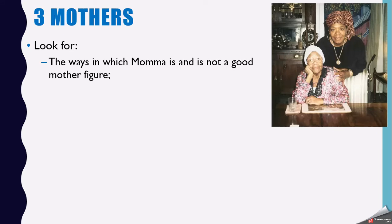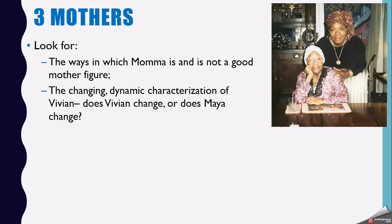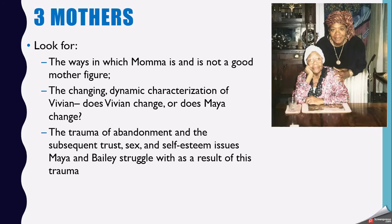Things to look for: the ways in which Mama is and is not a good substitute mother figure — how she does a good job and where she falls short. There's a lot in terms of how the children are loved and how love is expressed or not expressed. Also watch for the changing dynamic characterizations. Does Vivian change? Does Maya change? And the trauma of abandonment — the absence of a mother in her life and in Bailey's life causes issues with sex, self-esteem, and trust, which are directly tied to not having a mother or father.